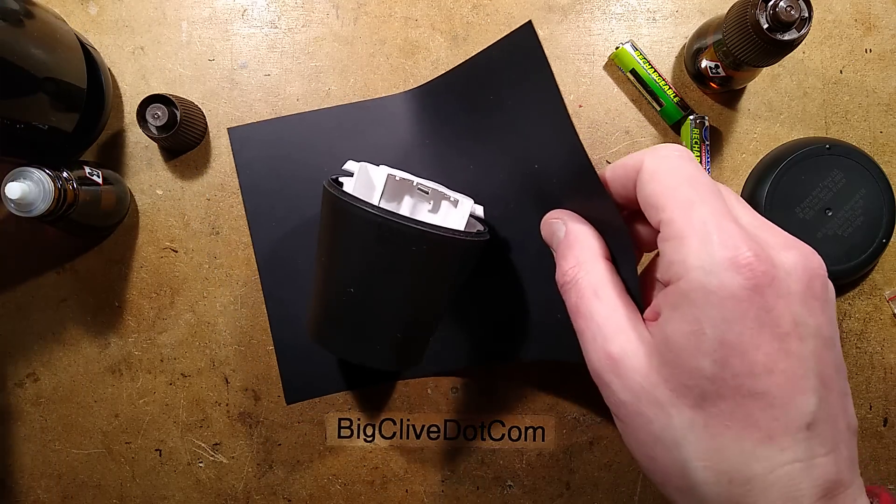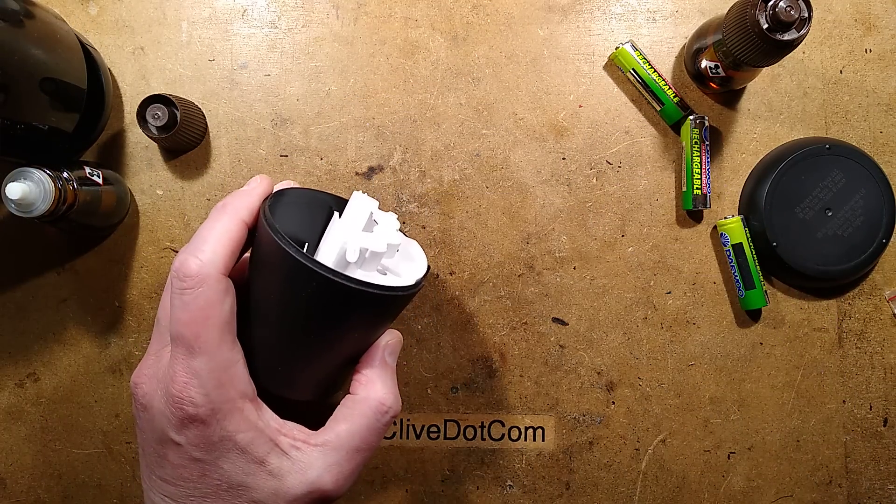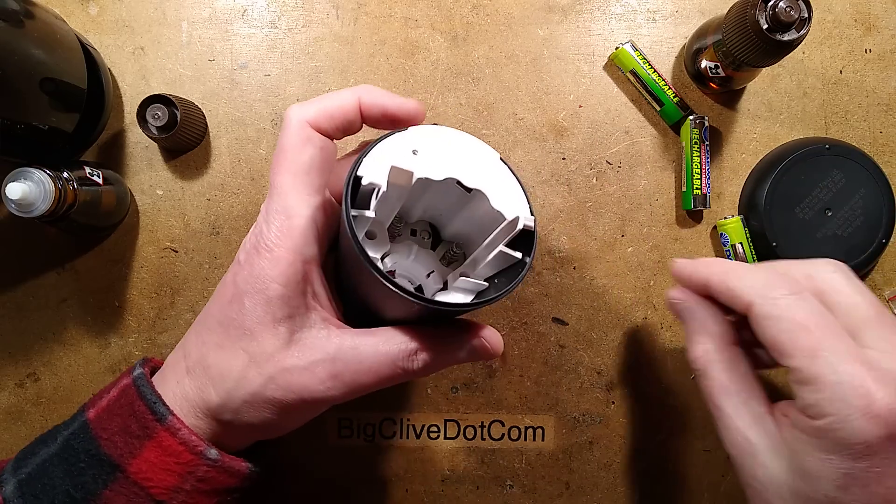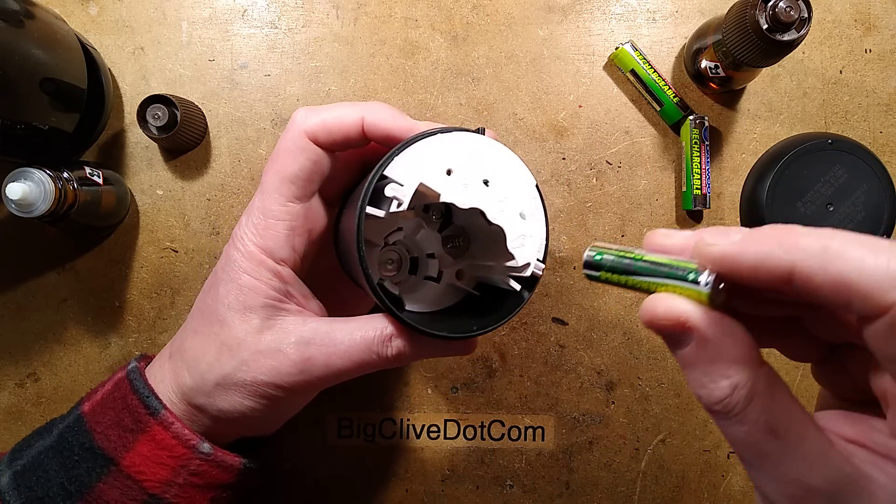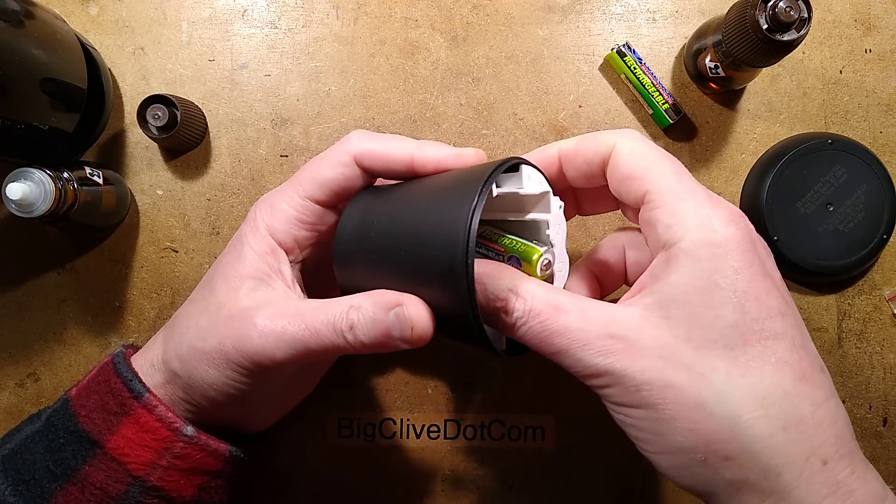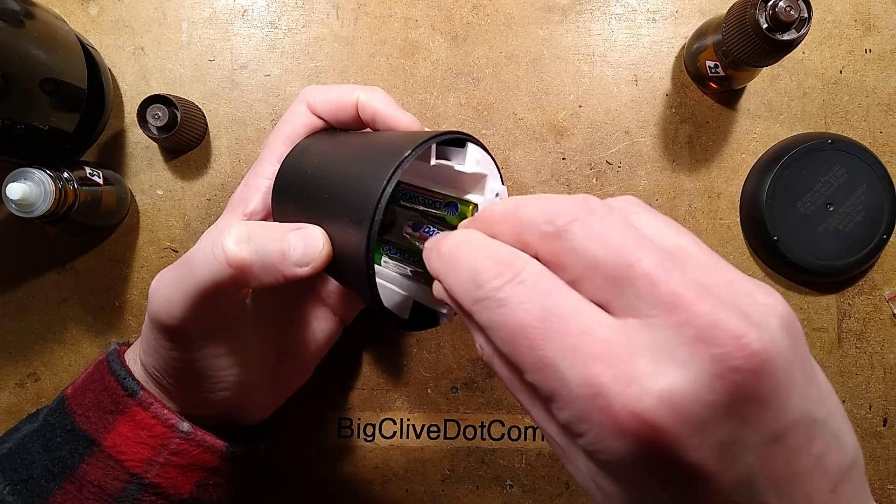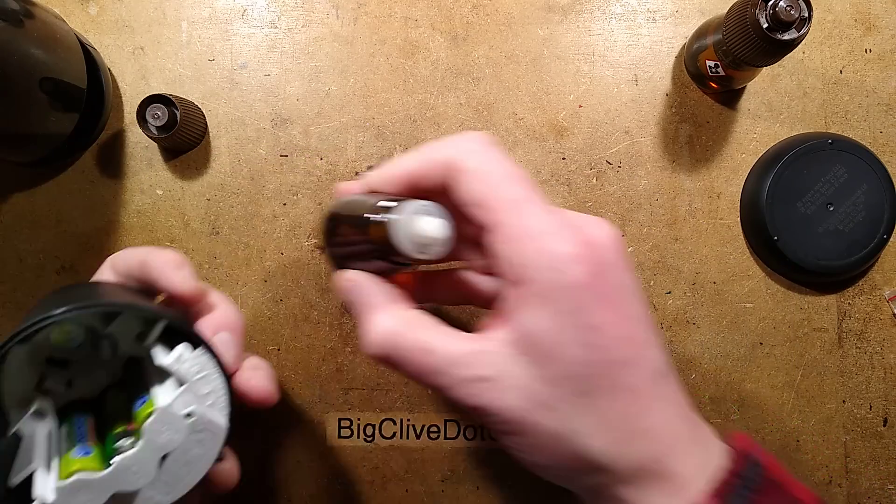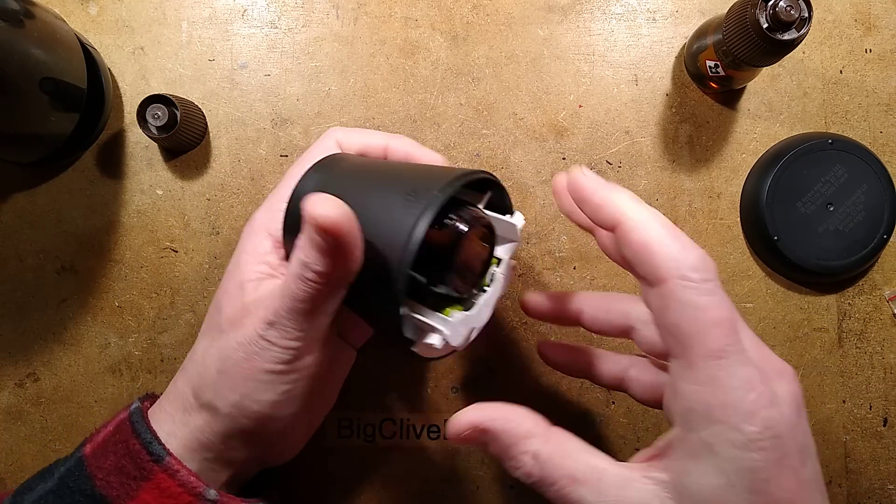When you take the base off, you have to put the batteries in first because otherwise you wouldn't get that aroma in. They go in fairly easily. It's quite a nice design. Then the aroma bottle goes in - just pushes in.